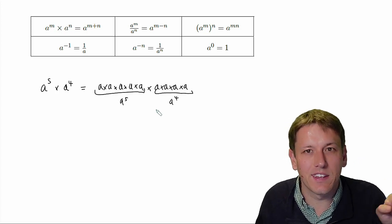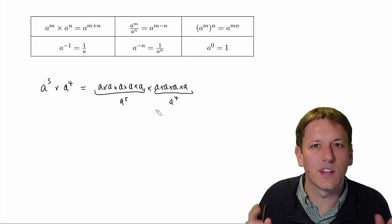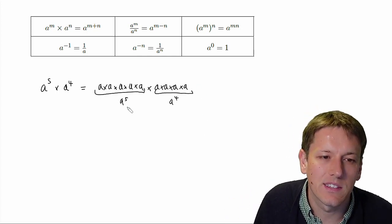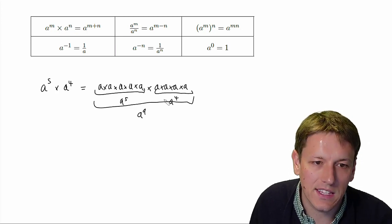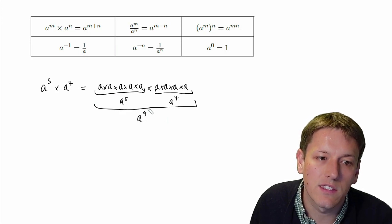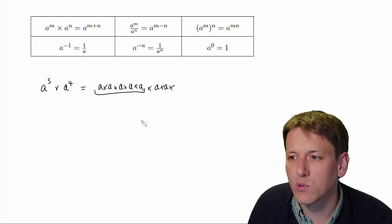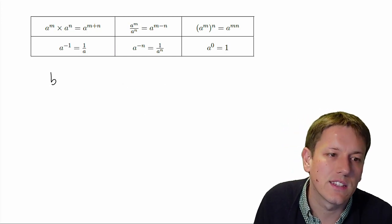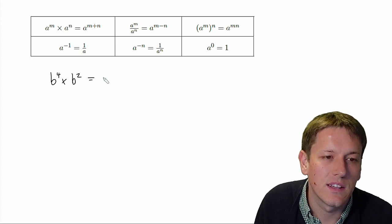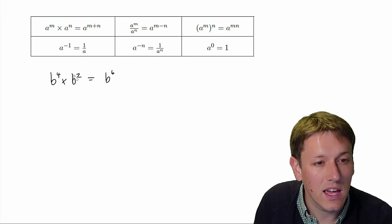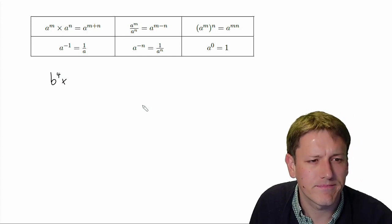So what I'm really saying in this rule is that if I have 5 A's multiplied together and then 4 A's multiplied together, in total I've got 5 plus 4 A's multiplied together. So I could think of this whole thing as A to the 9, rather than A to the 5 times A to the 4 — there are 9 in total. That rule would apply in general: if I had B to the 4 times B squared, that would be B to the power of 6. So I can just add the powers to multiply.